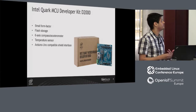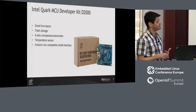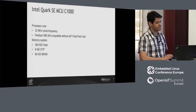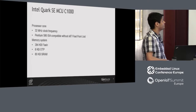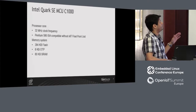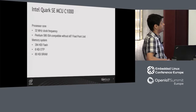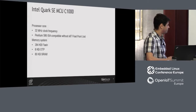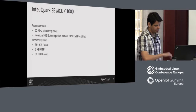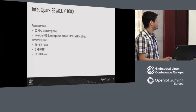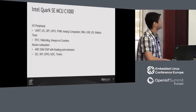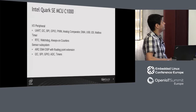The second SOC is the Quark SE. From the processor core, it's pretty much the same. We have some changes on the memory system — we have much more flash and much more RAM.